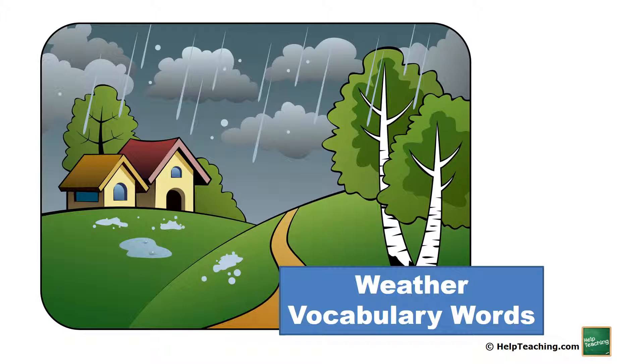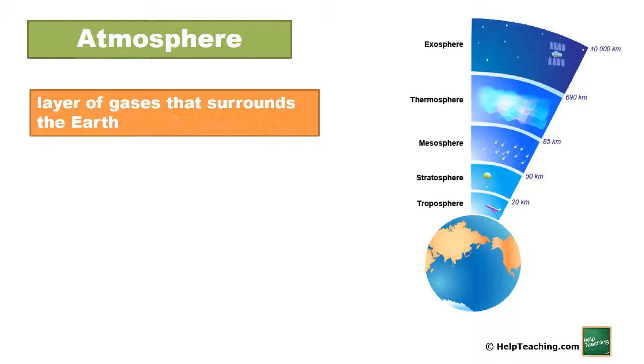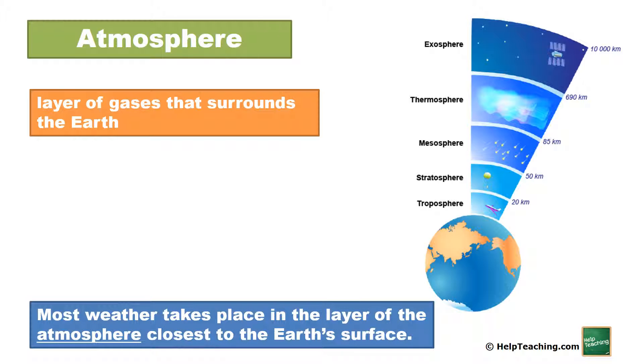Weather. Atmosphere. Layer of gases that surrounds the Earth. Most weather takes place in the layer of the atmosphere closest to the Earth's surface.